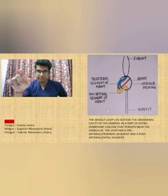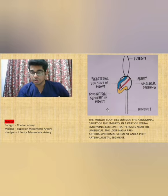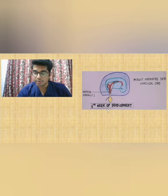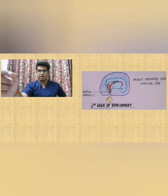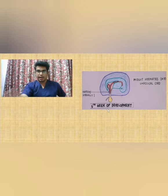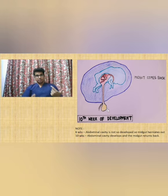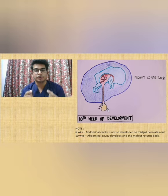Here is another slide showing the midgut loop. This diagram clearly shows the normal physiological herniation of the midgut loop, which occurs at around six weeks. At the 10th week of development, it goes back inside. So the normal physiological hernia present at six weeks comes back inside again.